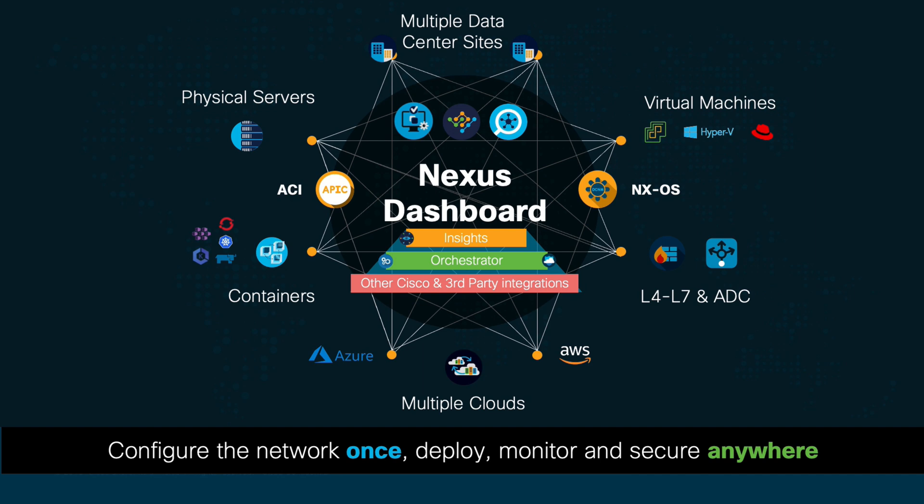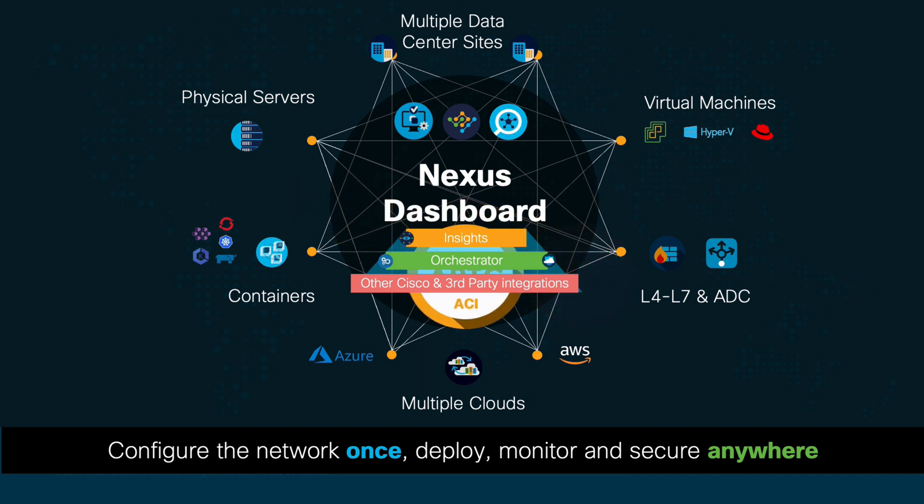With this being said, when you integrate your ACI sites into the Nexus Dashboard, you can get automation for multiple sites and clouds, a consolidated operational model for all of them, and predictive analytics that can help you minimize risk.